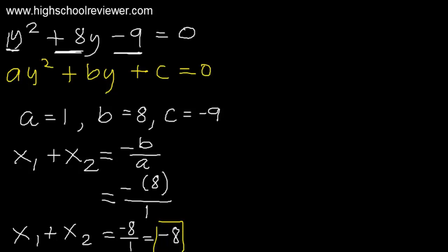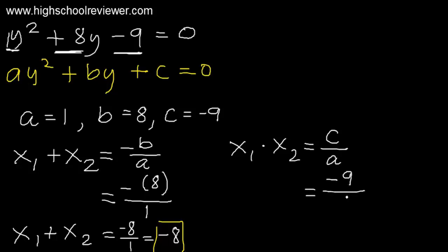For the product of the roots, x₁ times x₂, the formula is c over a. The value of c is negative 9, divided by a which is positive 1. So x₁ times x₂ equals negative 9 divided by 1, which is negative 9. So negative 9 is our final answer for the product of the roots.